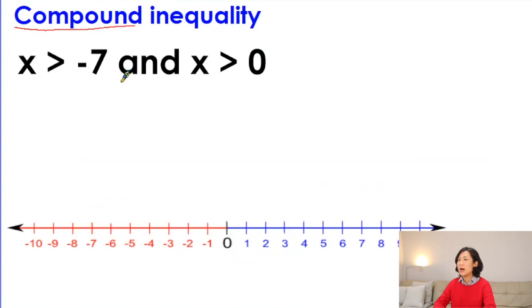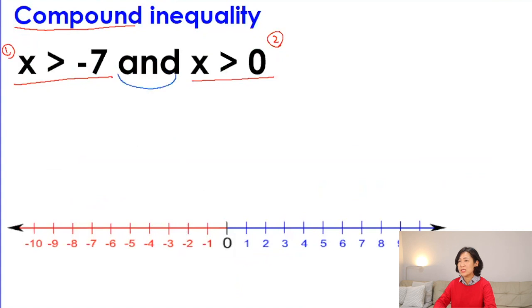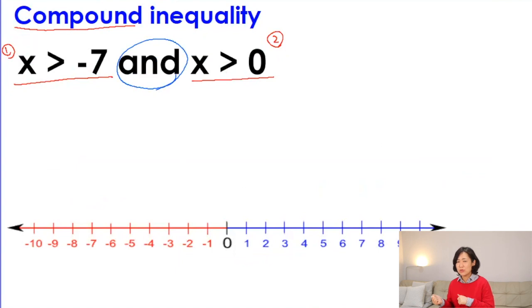What is a compound inequality? Compound means you put things together. For example: x is greater than minus seven, and x is greater than zero — these inequalities are connected by the word 'and.' Compound inequalities have two types: one uses the word 'and' and the other uses the word 'or.'